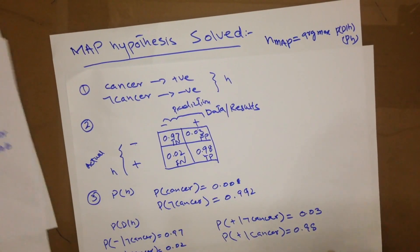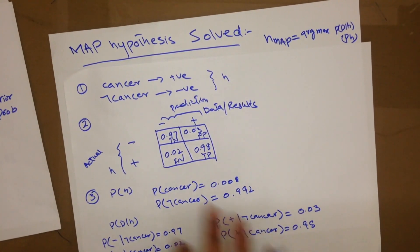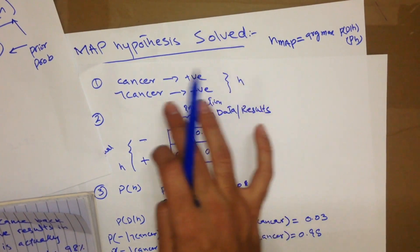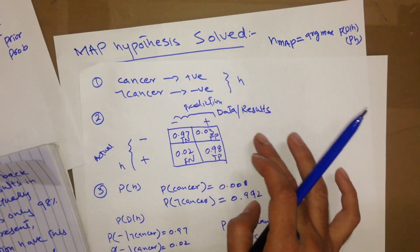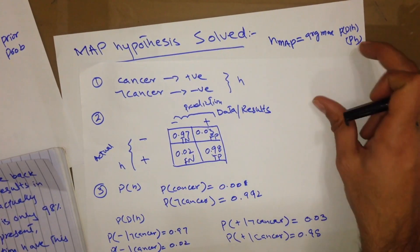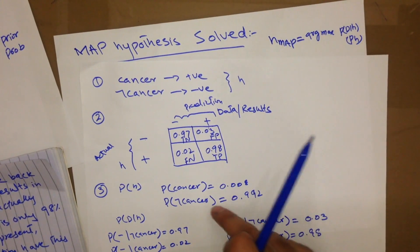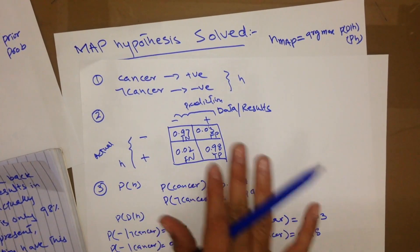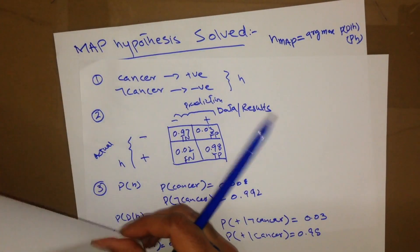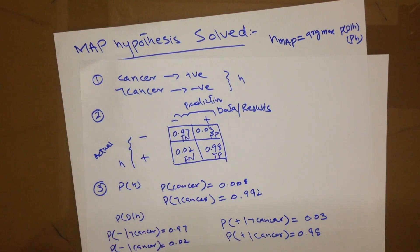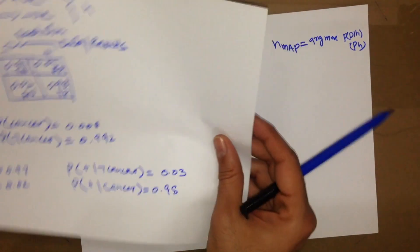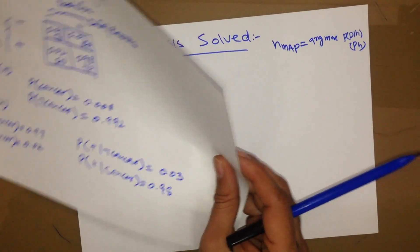The fundamental steps for calculating a MAP hypothesis will be the same because the question is the same. So cancer is going to be positive and not cancer is going to be negative. The confusion matrix values will be the same, and the probability values for P(H) are going to be the same. Whatever we have calculated so far is going to be useful to calculate the MAP hypothesis. Let's proceed to find out the first value.